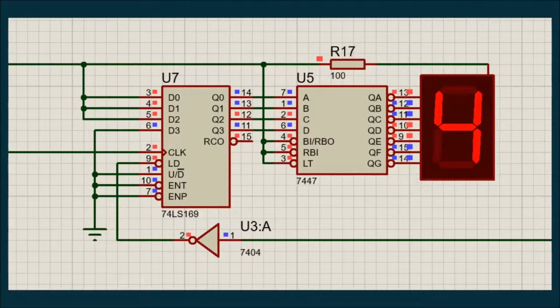On the right, we have our 7447 decoder. The decoder is basically taking BCD code as input and converting it for 7-segment display input. Now, my fellow mate Shammo will continue from here.